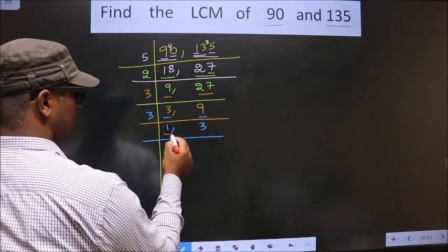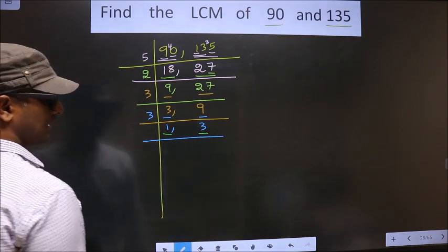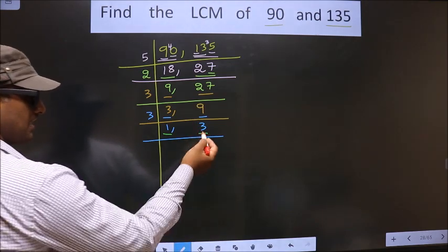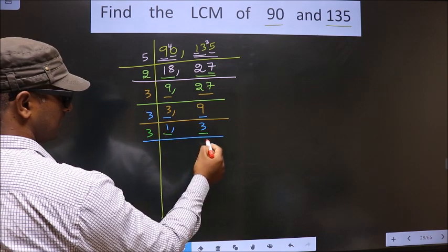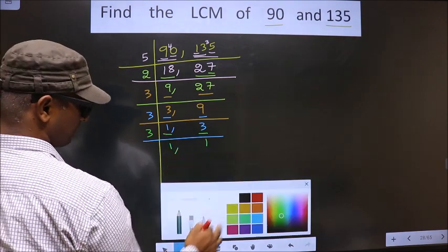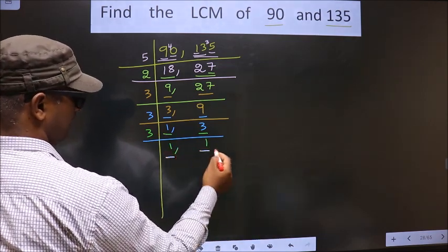Now here we got 1, so now you focus on the next number, that is 3. 3 is a prime number, so we take 3 once 3. So now we got 1 in both places.